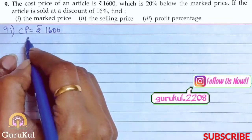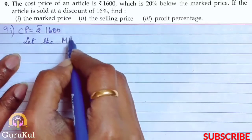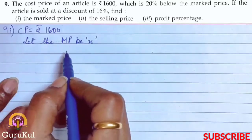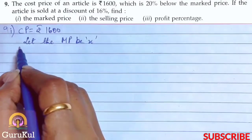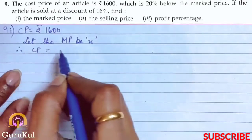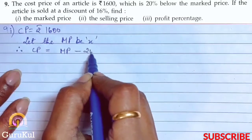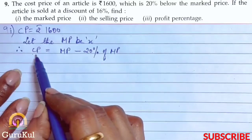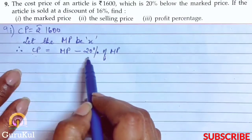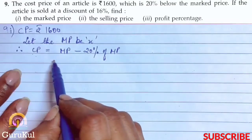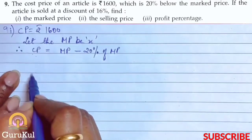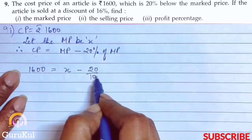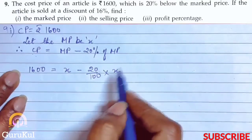So let the marked price be x. It is given that the cost price is 20% below the marked price. Therefore, cost price equals mark price minus 20% of marked price. So the equation formed is: 1600 equals x minus 20% of x. Now let us solve this.